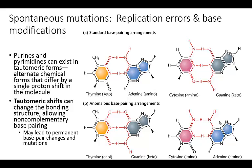Within spontaneous mutations, you can also have base modification issues. When bases try to pair up, purines and pyrimidines can exist in different tautomeric forms — alternate chemical forms that differ by just a single proton shift in the molecule. These shifts can change the bonding structure, leading to non-complementary base pairing, which can potentially result in permanent base pair changes and mutations.